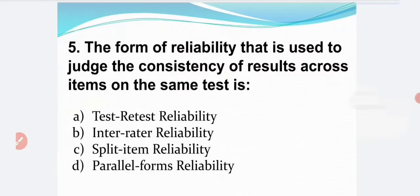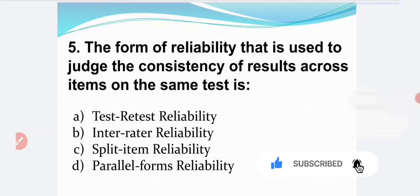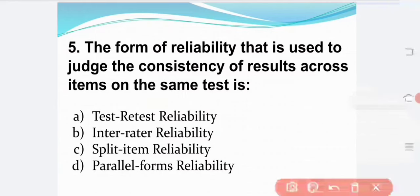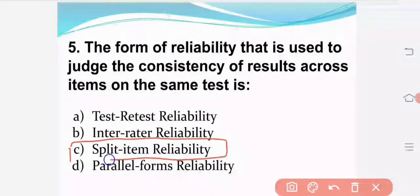The form of reliability that is used to judge the consistency of results across items on the same test is: Option A — test pre-test reliability. Option B — inter-rater reliability. Option C — split item reliability. Option D — parallel forms of reliability. The correct answer is Option C: split item reliability.